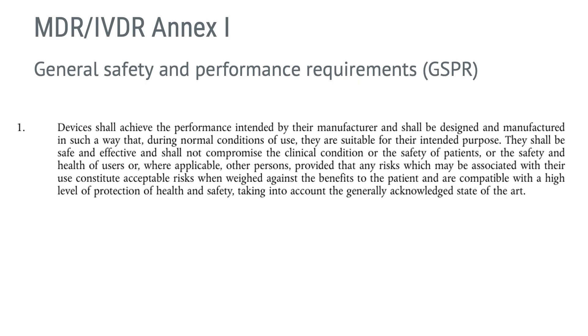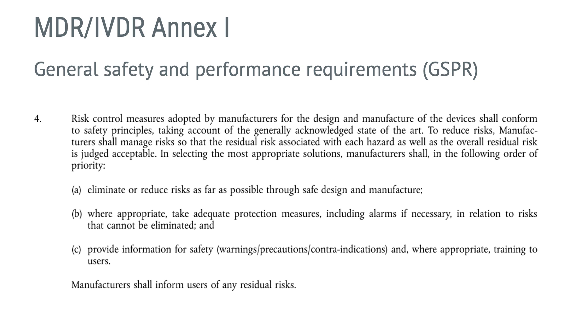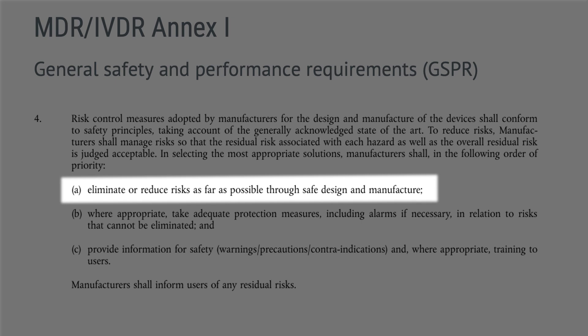The GSPR first requirement states that devices shall achieve the performance intended by the manufacturer and shall be designed and manufactured in such a way that, during normal conditions of use, they are suitable for the intended purpose. Manufacturing is mentioned in the very first requirement, as it is an important factor in ensuring the safety of the device. GSPR point 4 discusses risk control measures and includes the requirement that manufacturers shall eliminate or reduce risks as far as possible through safe design and manufacture. Process validation is one way, and sometimes even the only way, to ensure that risk control measures are effective.